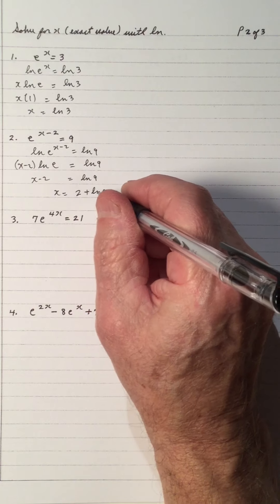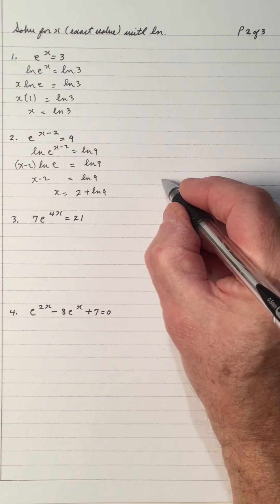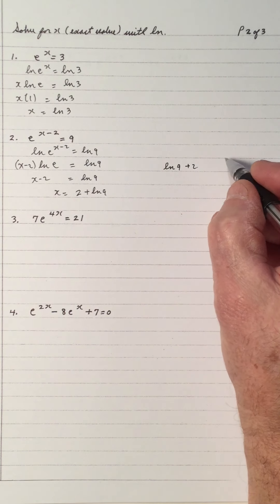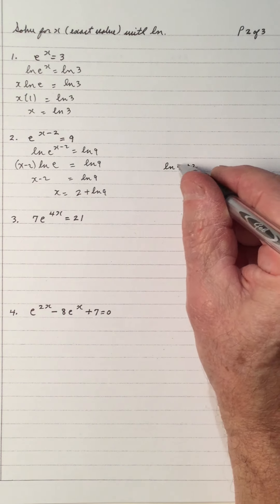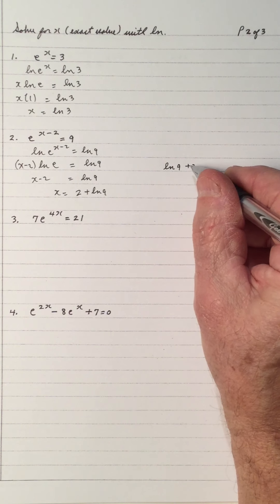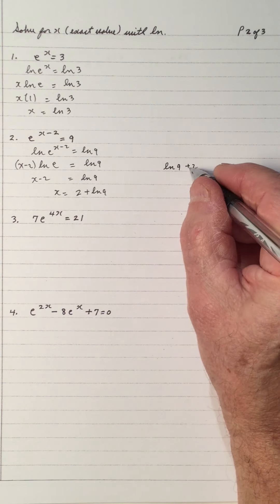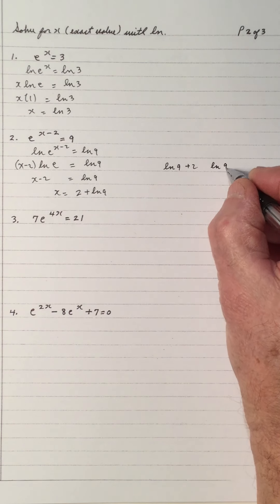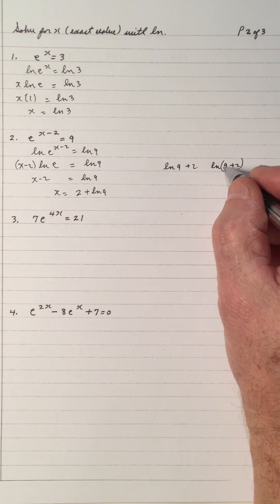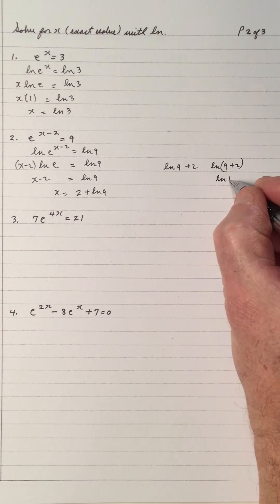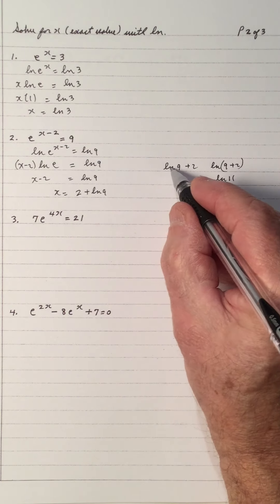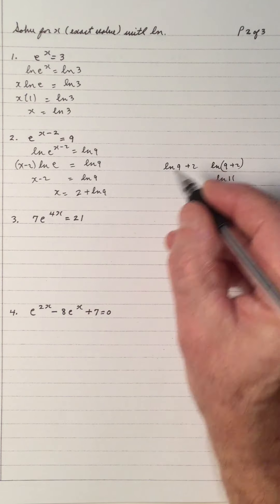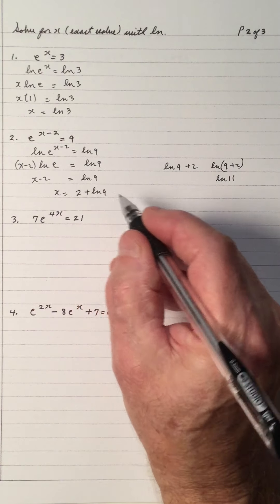Notice I put 2 in front of the ln. The reason: if I wrote ln 9 plus 2, then the 9 is with the ln and not the 2. So you've got to be careful — that would be the ln of 9 plus 2, which is the ln of 11. So I put the 2 in front so we wouldn't get mixed up.